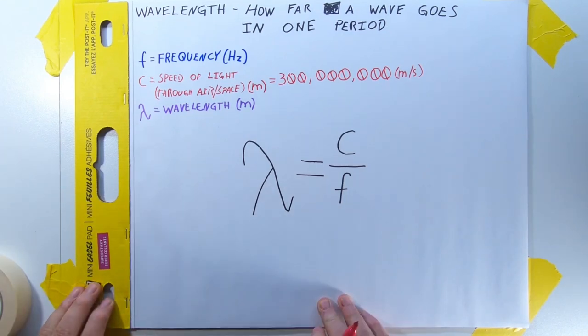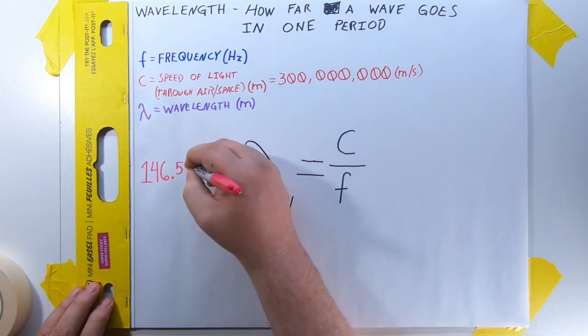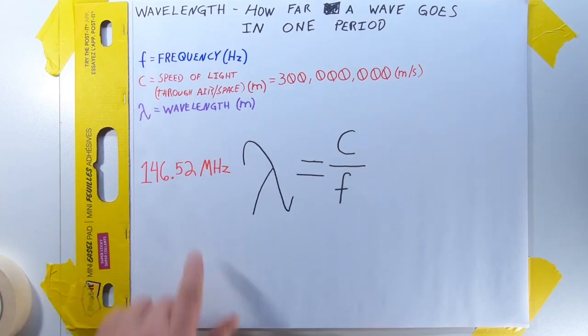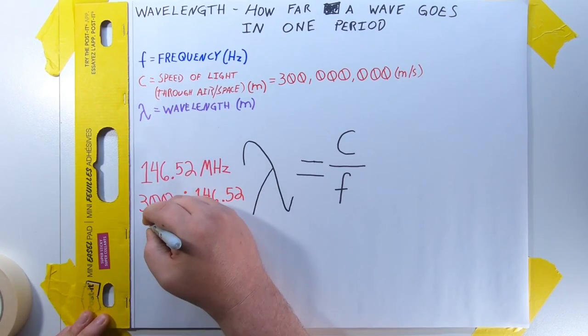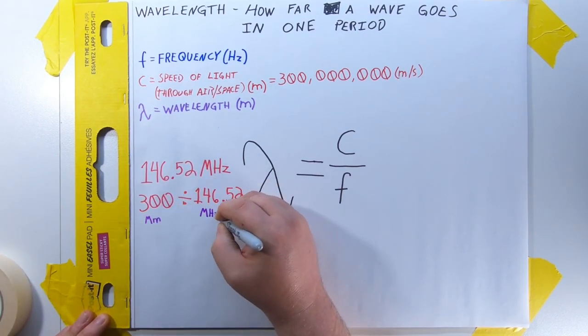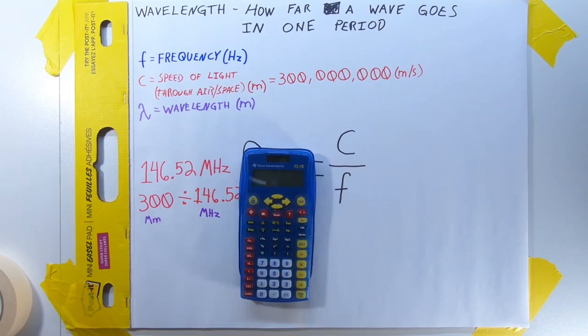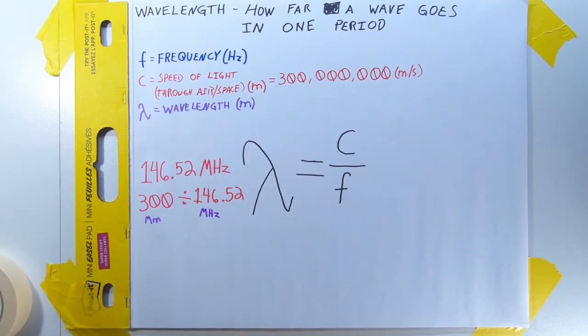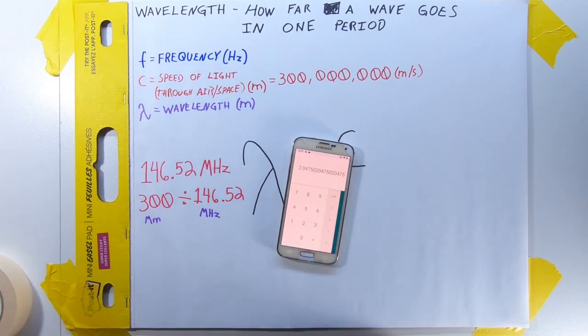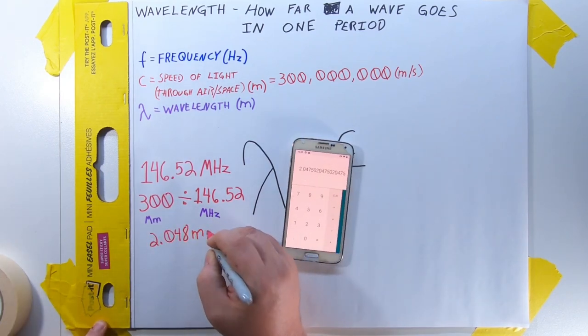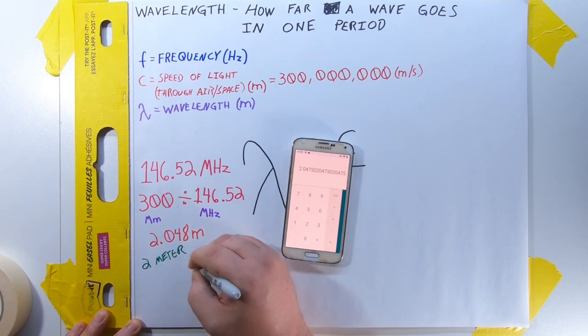Let's give it a shot. Becky wants to contact me on 146.52 megahertz. Since we're measuring in megahertz, we should use megameters. So it's 300 divided by 146.52. Let me get up my calculator. Wait, you can't see this one. All right, so phone. Anyway, it comes out to 2.048 meters, which, hey, two meters is a ham band.